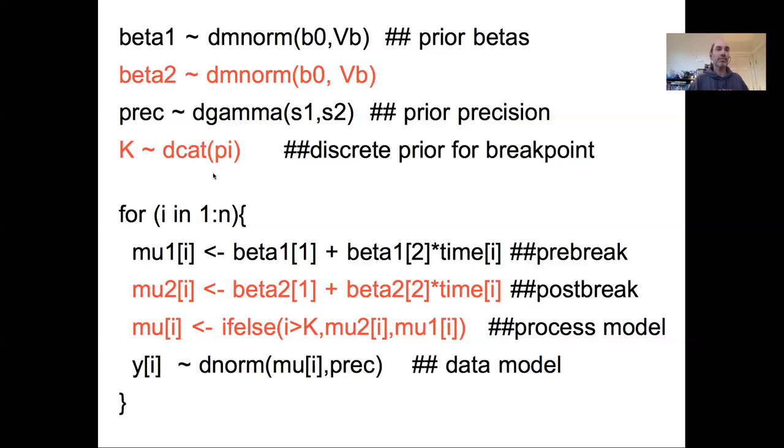Even beyond that, there's ways of doing things like reversible jump MCMC models that might actually treat the number of change points as an unknown in a model. With that, this wraps up our discussion of time series models. After this, we're going to move on to spatial models, which are in many ways a very direct extension of what we've been doing in time series models, but where instead of having one dimension where autocorrelation can occur on, we now have two or more dimensions. Thanks.